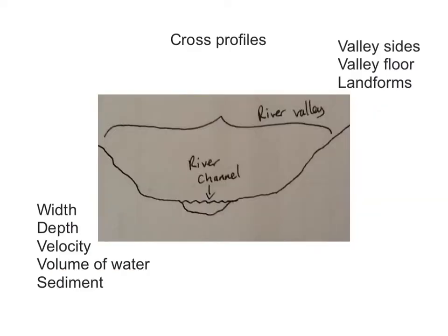Cross profiles by contrast are something very different. They are a side-on view of the river and the river valley — the area either side of the river. It relates to the valley sides: are they steep or flat? The valley floor — is it wide? And also any landforms that there might be. The river channel itself is where the water of the river is carried.